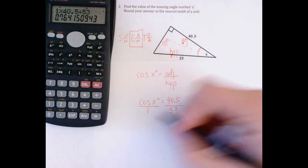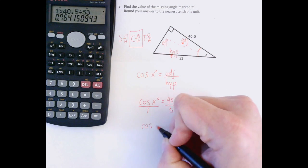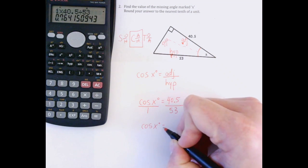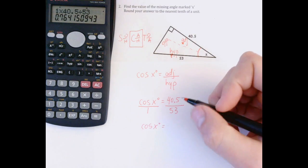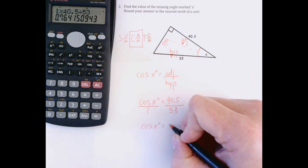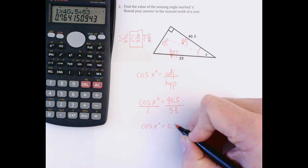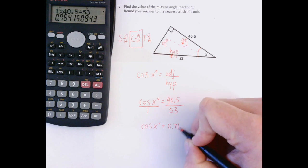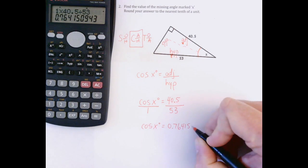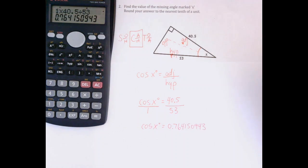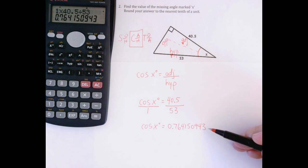No need to write that out, but I will for the sake of the problem. If you were doing this on your own, you should just leave that on your calculator and skip to the last step. But for the sake of the video, I'll write it out: 0.764150943. You can see why we don't want to write that out every time.